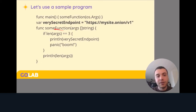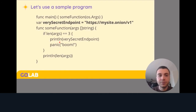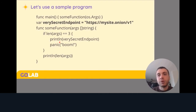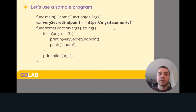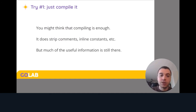Let's use a sample program to move forward. I've got a main function that calls another function with the input arguments. This function, if given a specific number of arguments — itself plus two more — will print a very secret endpoint, for example for an API deployed as a Tor service, and then it's going to panic. Otherwise, it will just print the number of arguments it was given. Our first try would be to just compile it. You might think compiling is enough — it does strip some information like comments and inline constants, but it doesn't do much else.